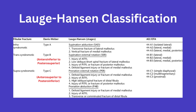Starting with the supination adduction injury mechanism. These can involve injury to the distal fibula, and as you might recall from the last video, this was the Weber A pattern. Thus you can have a quick association between Weber A fractures and the supination adduction injury mechanism.